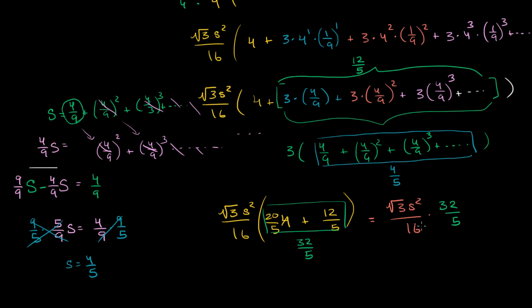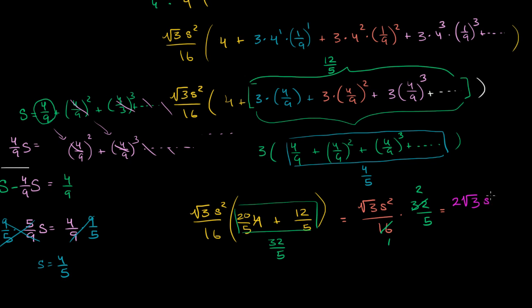32 divided by 16 is 2, and 16 divided by 16 is 1. And we are left with, and this is where we really do need a drum roll, the area of a Koch snowflake where the initial equilateral triangle that we started with has each of its sides length S, is 2√3 s² all of that over 5.